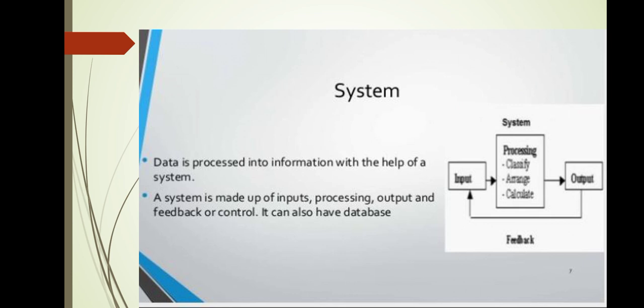Data is processed into information with the help of a system. A system is made up of inputs, processing, output, and feedback or control — these are all the components of a system. Sometimes it can also have a database. From this picture we can understand: the input is fed into the processing concept and after processing it is given as an output.